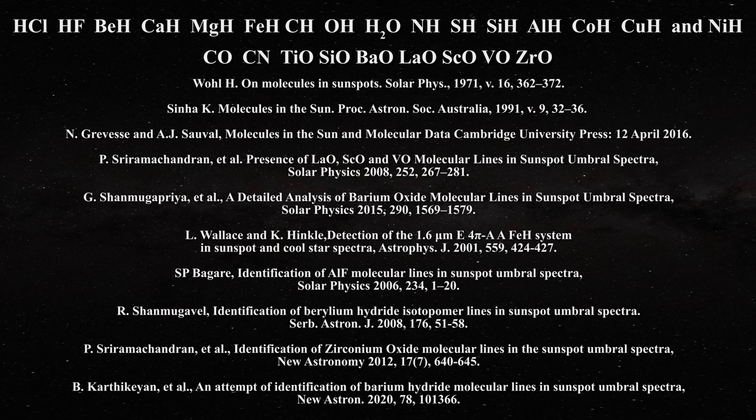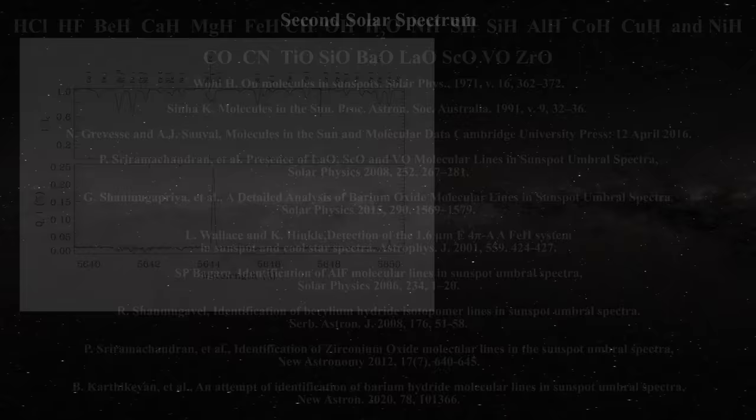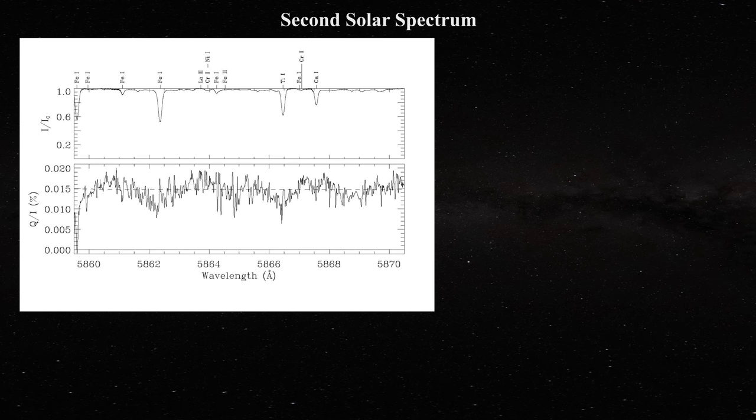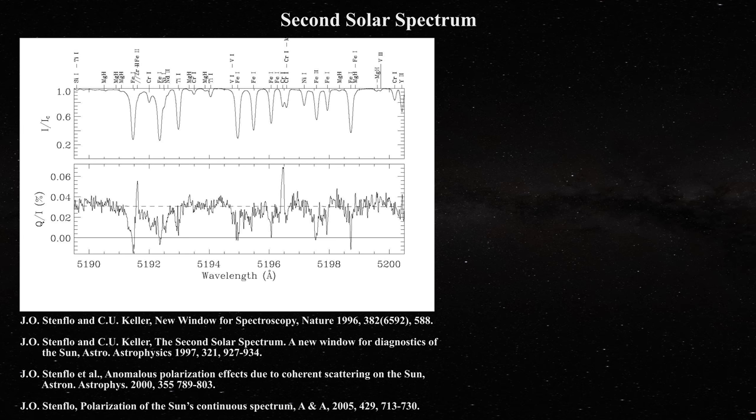Remember that many molecules have been detected in the Sun and their presence involves chemical reactions. Those reactions will have reactants and products which might leave spectroscopic evidence. Today I wish to examine what has become known as the second solar spectrum. We can scroll through some of the most interesting examples of the second solar spectrum as the main features are described.